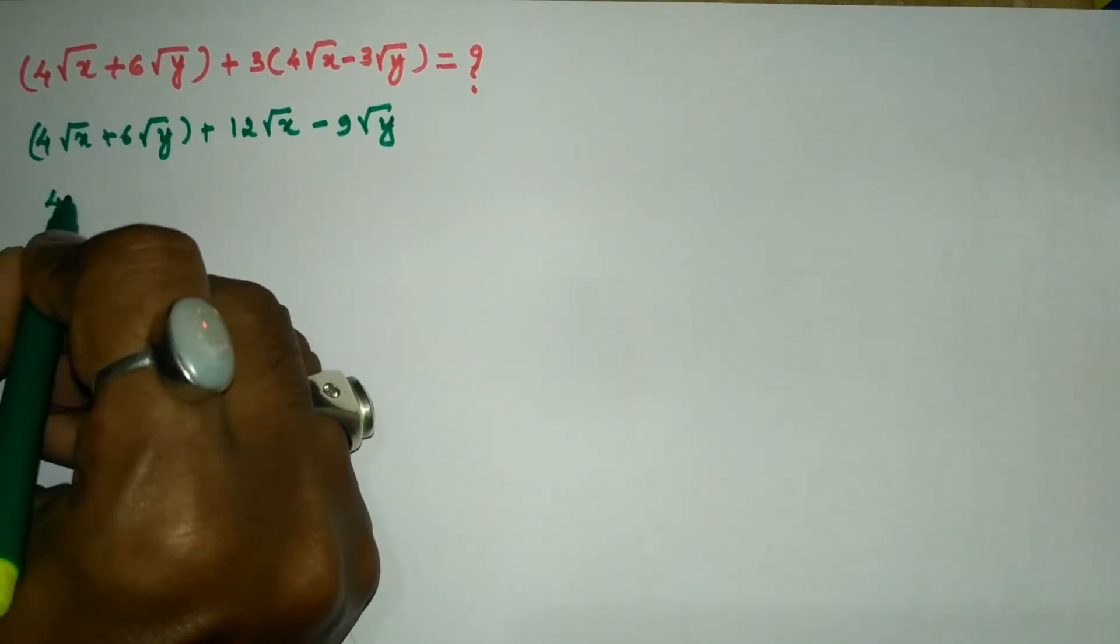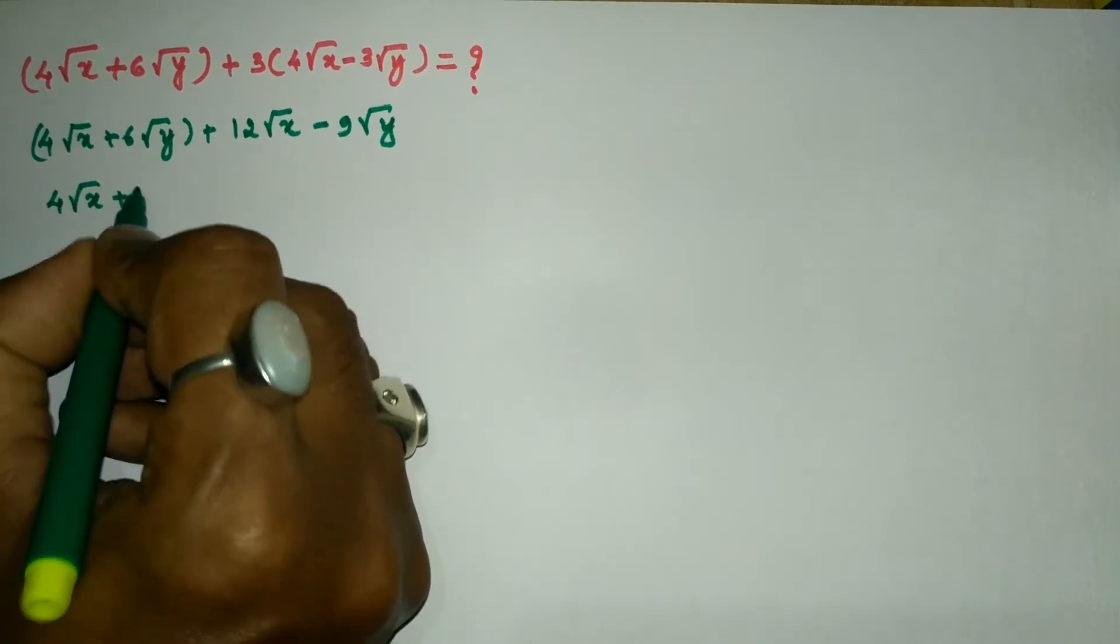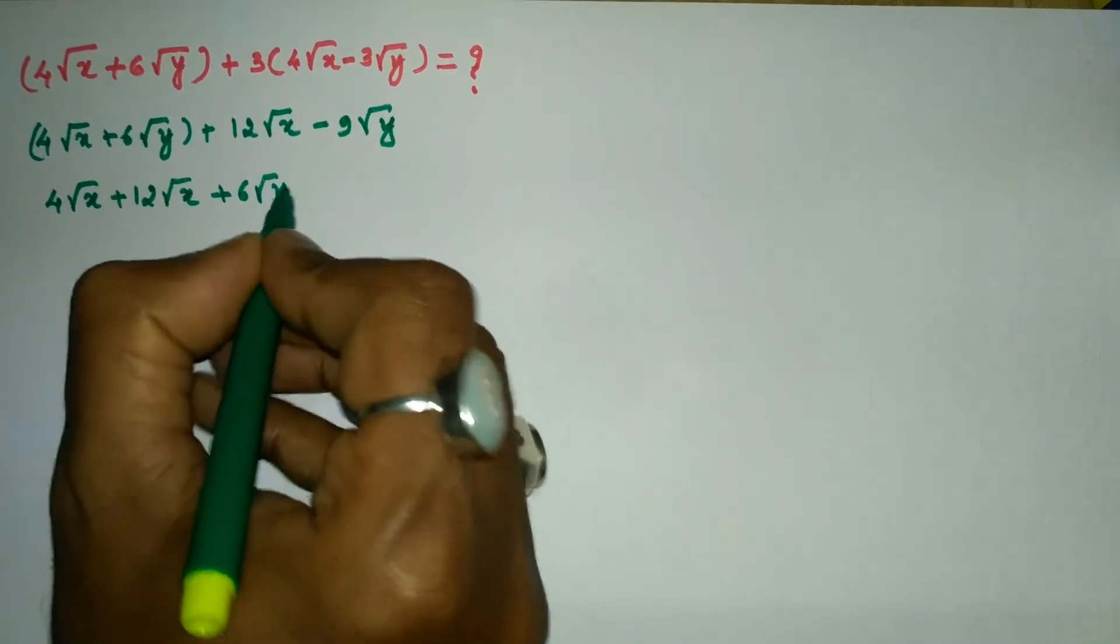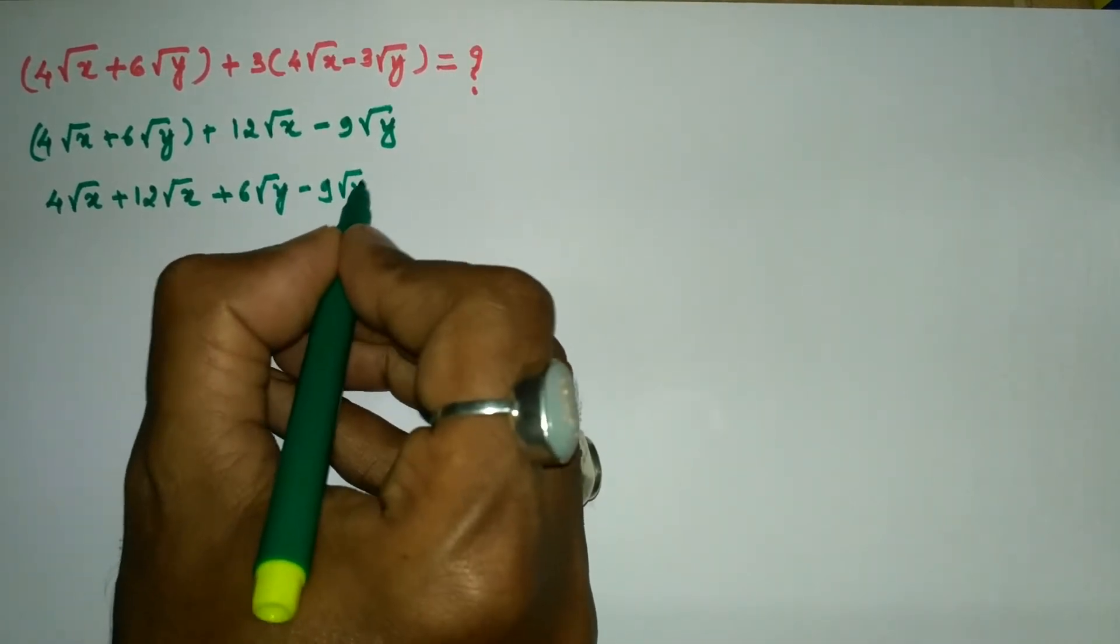So here I could write 4√x + 12√x, then plus 6√y - 9√y.